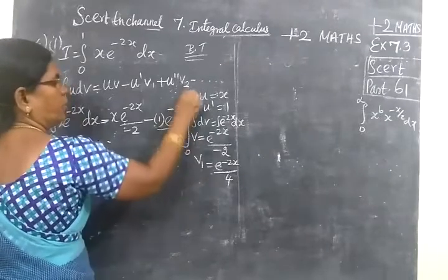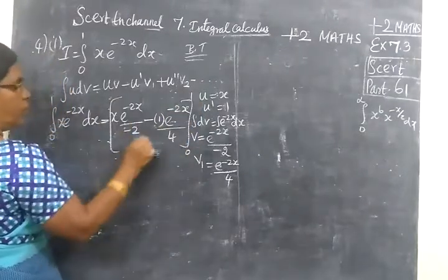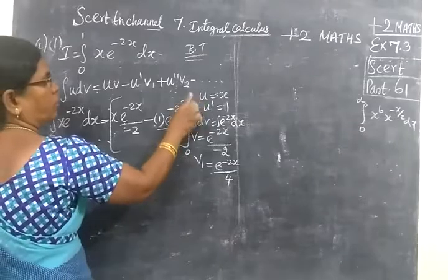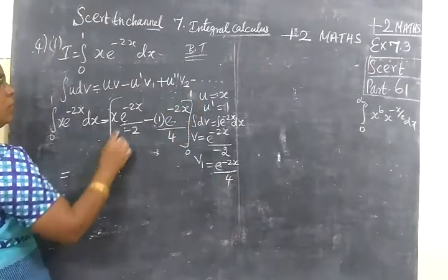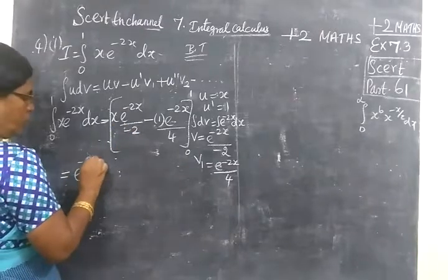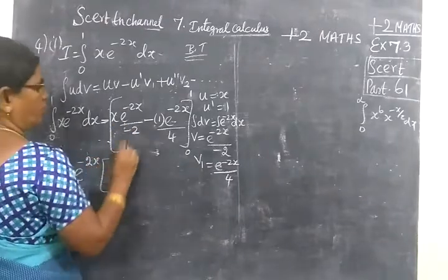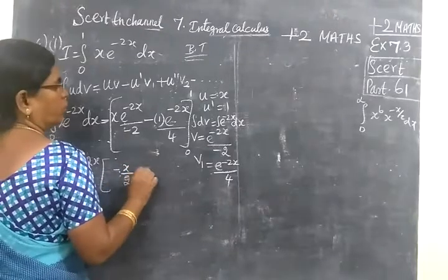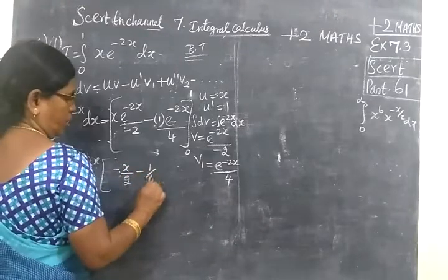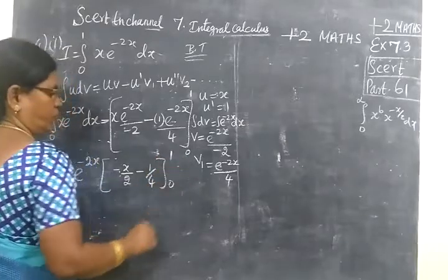Now what is the limit? 0 to 1. Now applying the limit from 0 to 1, take e power minus 2x common. So inside minus x by 2, then minus 1 by 4, limit is 0 to 1.